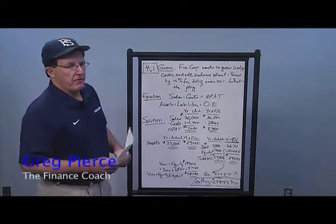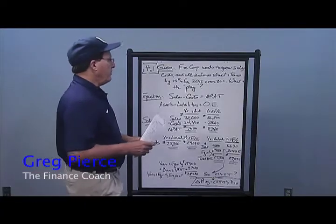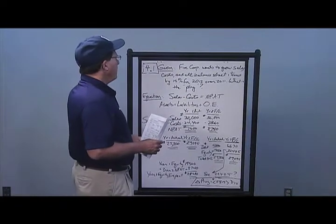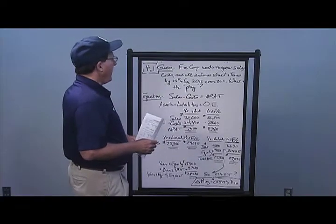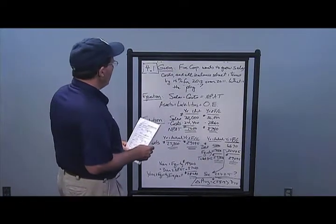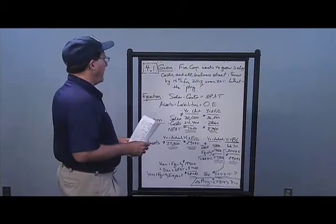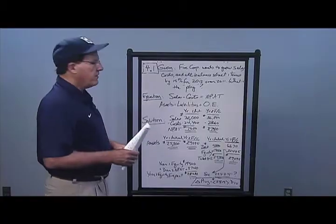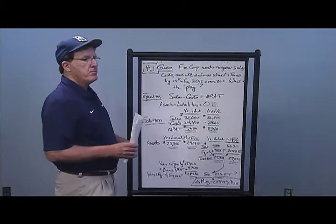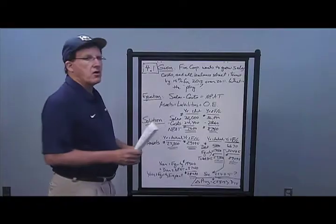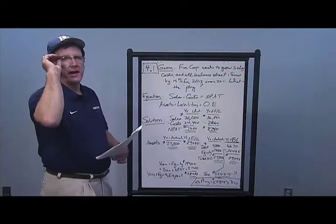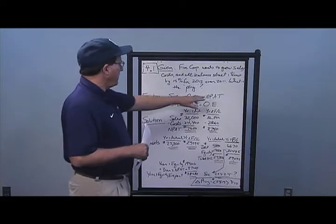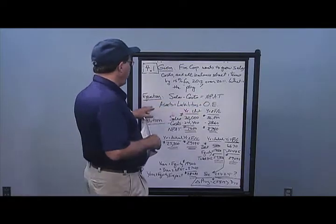Welcome to Chapter Four problems with Finance Coach. Problem number one: Fire Corporation wants to grow their sales, costs, and all balance sheet items by 15% year-over-year. We need to find out what is the external financing needed, or the plug. The equations are: sales minus cost equals net income (income statement), and assets equal liabilities plus owner's equity (balance sheet).